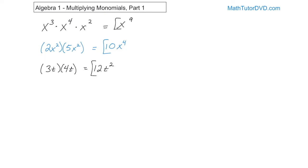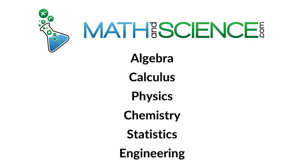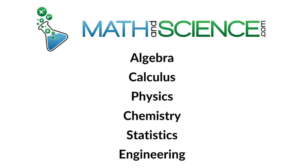So basically, when you're multiplying things with exponents: verify the base is the same, carry that to your answer, and add the exponents together. If you have any numbers, you can always multiply those together. Make sure you understand these and then follow me on to the next lesson — we're going to get some more practice and crank up the problem complexity a little bit to give you extra confidence. Learn anything at mathandscience.com.